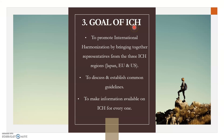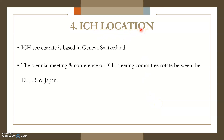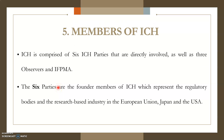The goal of ICH is to strengthen the capacity of drug regulatory authorities and industries. It has been utilized by promoting international harmonization, bringing together representatives of three regions: Japan, EU (European Union), and United States. An important goal is to discuss and establish common guidelines, and to make information available on ICH for everyone to promote natural understanding of regional initiatives. The ICH secretariat is based in Geneva, Switzerland, and biannual meetings and conferences held by the ICH steering committee are rotated between the three regions.